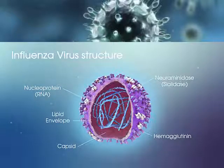Let's talk about the influenza virus. There are three kinds of influenza virus: type A, which is the most common and found both in human beings and in other mammals; type B, found only in human beings; and type C, found both in human beings and in pigs.